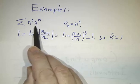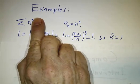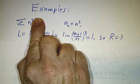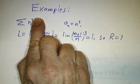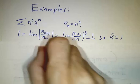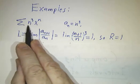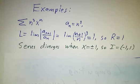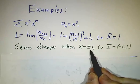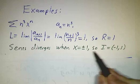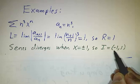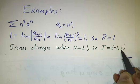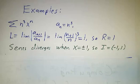When x is 1, we have just the sum of n cubed. Well, that diverges because the terms get big. When x is minus 1, you have plus or minus n cubed. That also diverges. So in this case, the series diverges when it's on the borderline, so the interval of convergence is an interval of radius 1, but that doesn't include the endpoints.